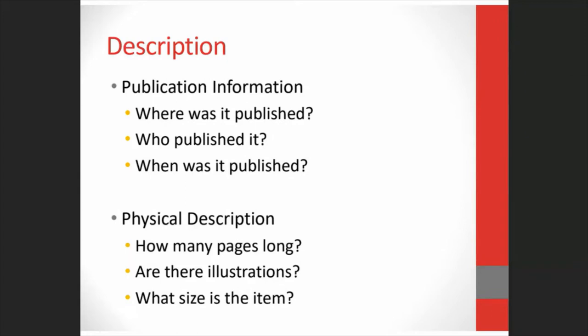We also include a physical description about the item. For books, this could be how many pages long is it, are there illustrations or maps, is the book in portrait or landscape orientation, and how tall is the book — measured in centimeters, not inches. Answering these types of questions helps us determine if the record we chose matches the item that we have in hand.